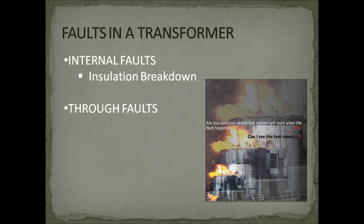Transformers are an essential part of the power system and are used throughout at different voltage levels, making transformer protection essential for reliable power supply. The two types of faults in a transformer are internal faults and through faults. Internal faults may occur due to insulation breakdown, creating a short circuit path between the phases and the grounded core, causing severe damage to windings. Through faults occur when faults on the secondary side cause severe current on the primary side, and vice versa, resulting in insulation breakdown and thermal damage.